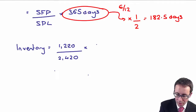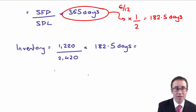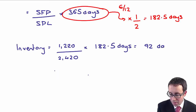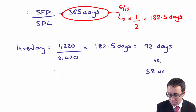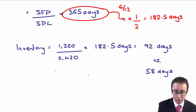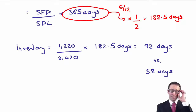So you need to multiply by 182.5 days instead of 365. That was nasty. When you calculate it, I think you get approximately 92 days for the current period, and for the previous six months you should get approximately 58 days.